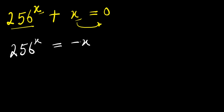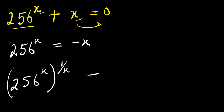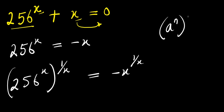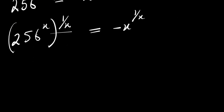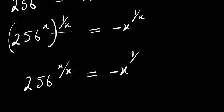I can decide to multiply the exponent by 1 over x in order to eliminate this x here. So I will have 256 power x raised to the power of 1 over x equals negative x power 1 over x. If you have 8 power n raised to the power of n, this equals 8 power n times n, so I multiply this out. I will simply have 256 power x over x equals negative x power 1 over x.